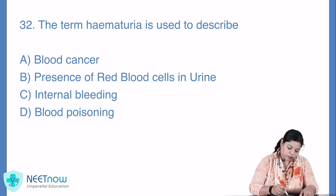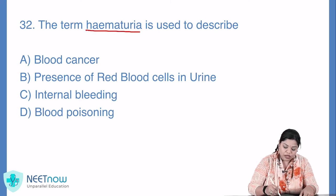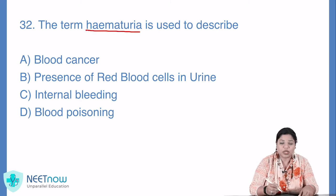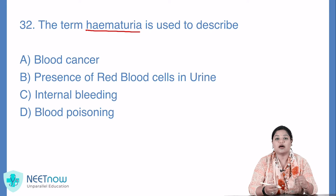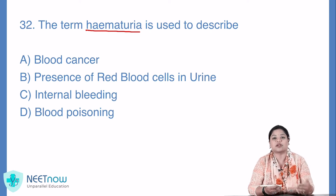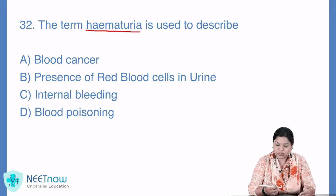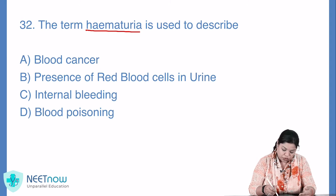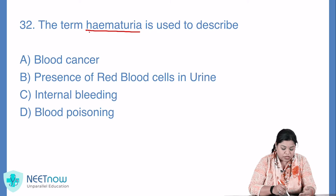Question number 32. The term hematuria is used to describe. Options: blood cancer, presence of red blood cells in urine, internal bleeding, or blood poisoning.